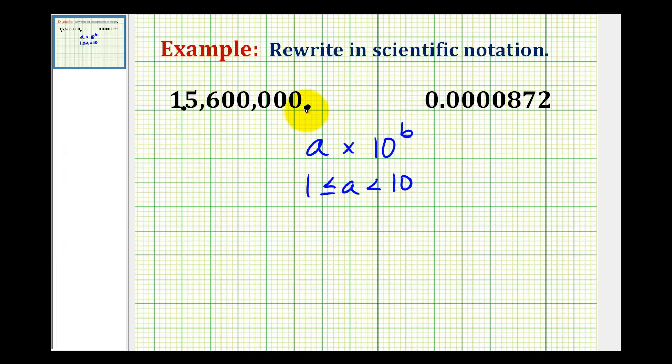So we have to move it 1, 2, 3, 4, 5, 6, 7 places to the left in order to satisfy the requirement for the value of A.